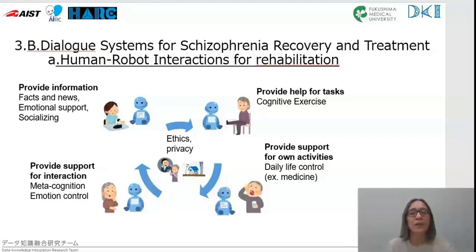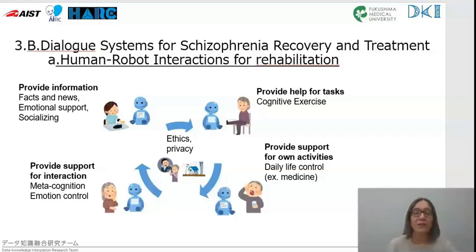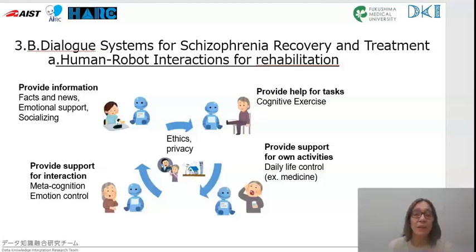There are many activities where an interactive robot can support rehabilitation. First, the robot can assist patients by providing information, facts, news, and peer experience, giving emotional support and improving feelings of security and socializing skills. The robot can also provide help in cognitive exercises, such as memory and word association games or storytelling events, training cognitive skills. Finally, the robot agent can support daily activities such as reminding patients to take medication, and support social interactions by helping with meta-level skills like emotion control.